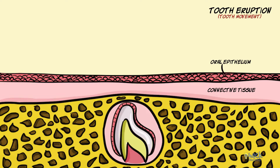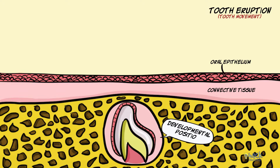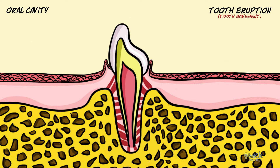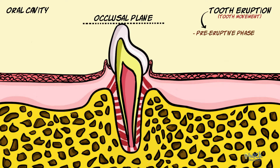Eruption is the process of tooth movement from its developmental position in the jaws to a functional position in the oral cavity, and involves movement of the tooth through the bone and the oral mucosa to reach the occlusal plane. These movements can be divided into three phases called pre-eruptive, eruptive, and post-eruptive phases.